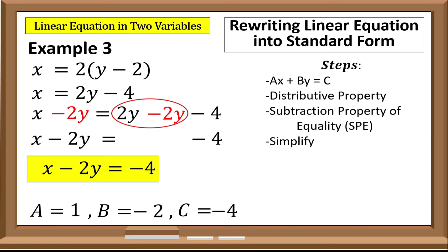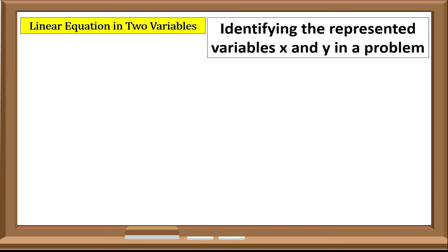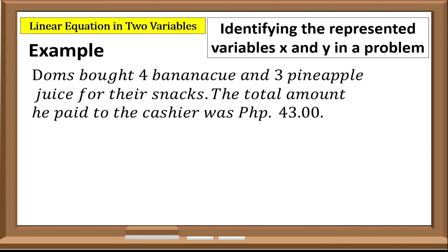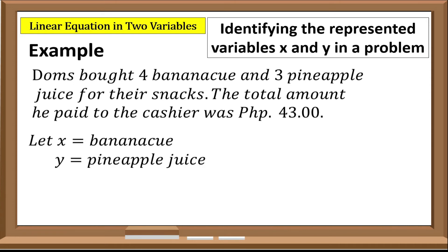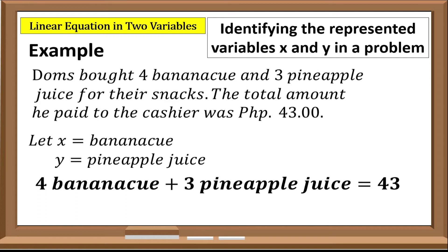We also need to understand the concept of identifying the represented variables x and y in a problem. For example, Dom bought four banana-q and three pineapple juice for their snacks, and the total amount he paid was 43 pesos. If we let x represent banana-q and y represent pineapple juice, the equation would be 4x plus 3y equals 43.